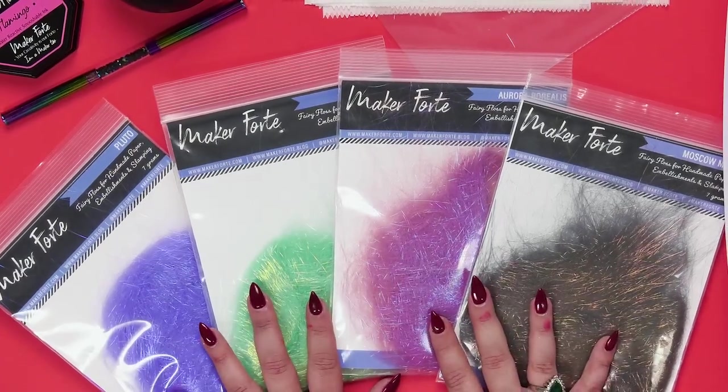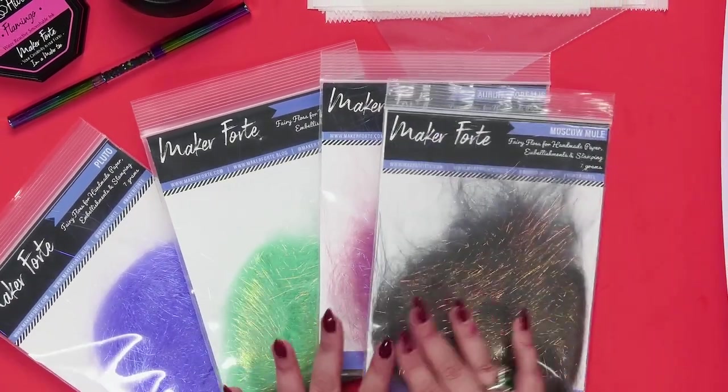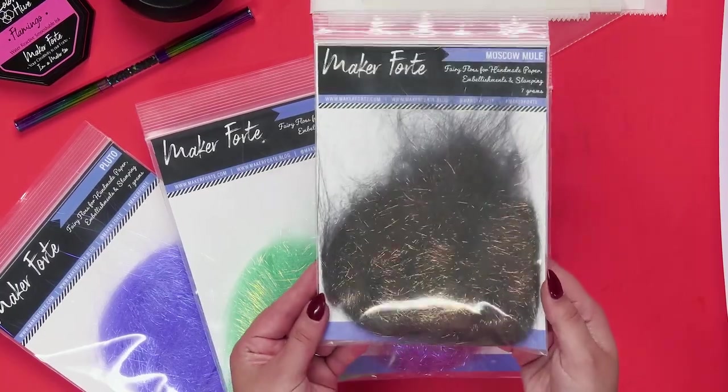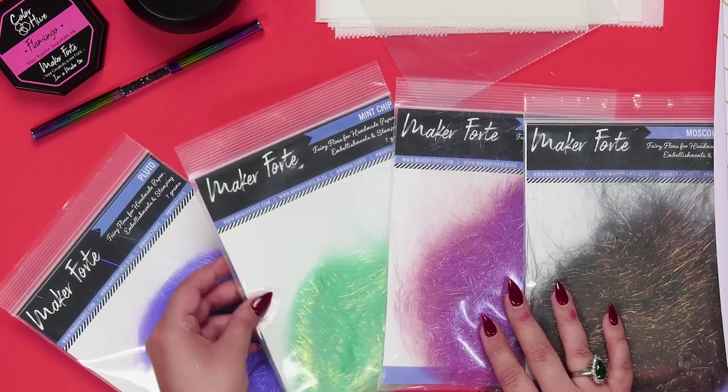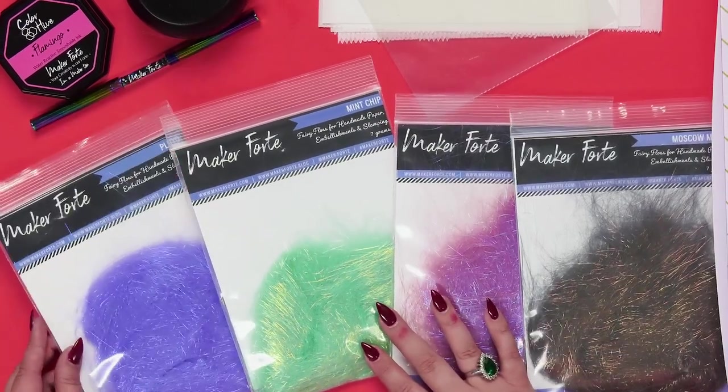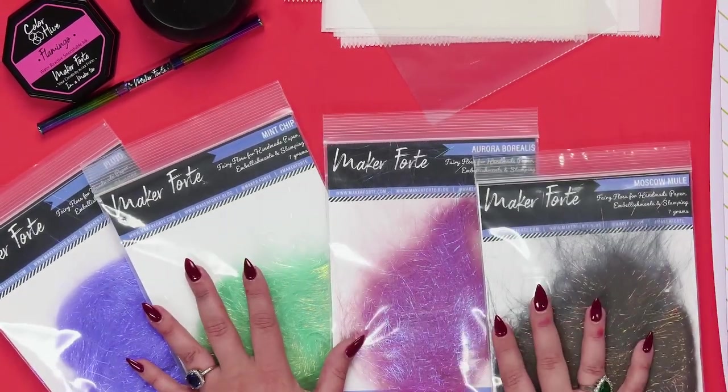This is going to be a ton of fun. We currently have the first four colors right here: we have Moscow Mule—look how gorgeous that is, the way it just changes color—we have Aurora Borealis, Mint Chip, and Pluto. One thing I will say about MakerForte colors is